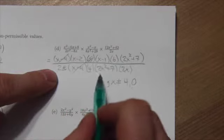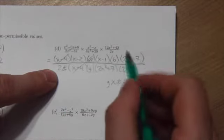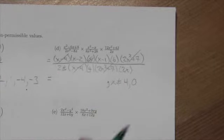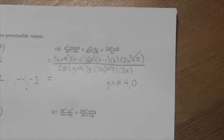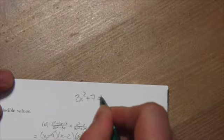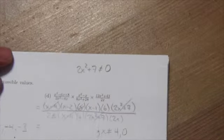(x - 1) doesn't have a partner, but 2x² + 7 does. That's an interesting one because I'm going to let those cancel out. But watch this: if we try to find out what the restriction is on 2x² + 7, it's kind of neat.